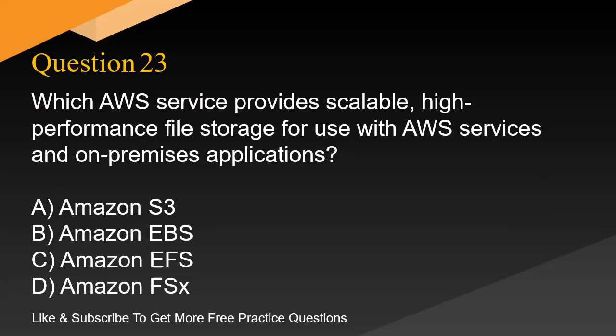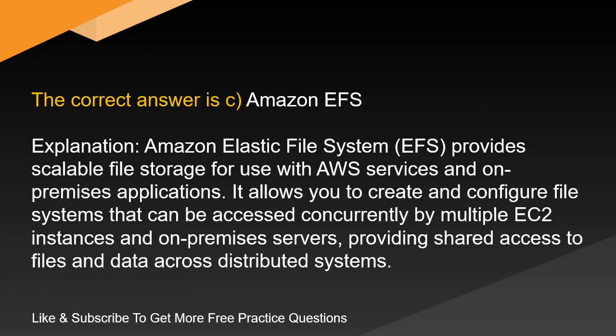Question 23. Which AWS service provides scalable, high-performance file storage for use with AWS services and on-premises applications? A. Amazon S3. B. Amazon EBS. C. Amazon EFS. D. Amazon FSx. The correct answer is C: Amazon Elastic File System, EFS. It provides scalable file storage for use with AWS services and on-premises applications, allowing file systems to be accessed concurrently by multiple EC2 instances and on-premises servers, providing shared access to files and data across distributed systems.